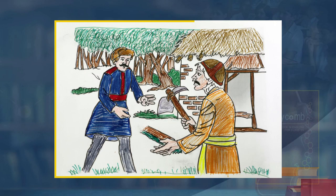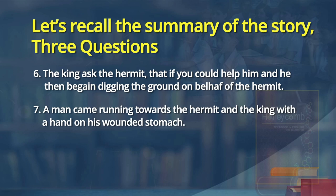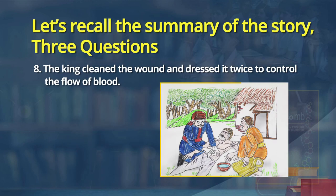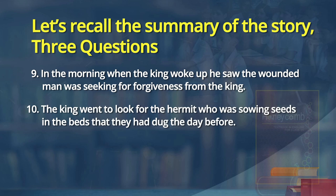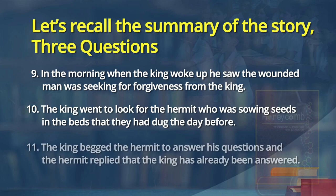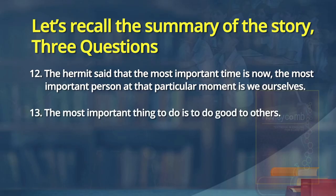The king asked the hermit if he could help him, and then began digging the ground on behalf of the hermit. As they were digging, a man came running toward the hermit and the king with his hand on his wounded stomach. The king cleaned the wound and dressed it twice to control the flow of blood. In the morning, the king woke up and saw the wounded man seeking forgiveness. The king went to look for the hermit, who was sowing seeds in the beds they had dug the day before. The king begged the hermit to answer his questions. The hermit replied that the king had already been answered — the most important time is now, the most important person at that moment is ourselves, and the most important thing to do is to do good to others.